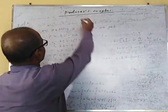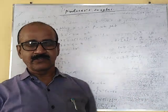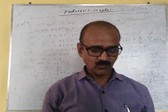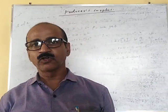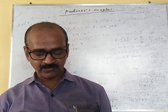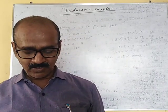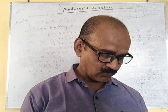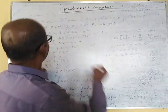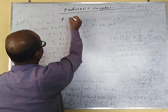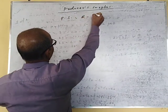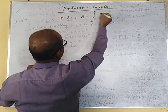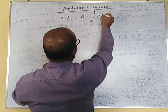Producer surplus is the difference between how much a person would be willing to accept for a given quantity of goods versus how much they can receive by selling the goods at the market price. In mathematical terms, producer surplus is equal to R minus integration A to B of T dX.